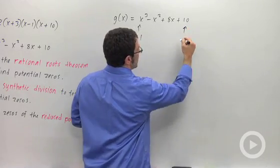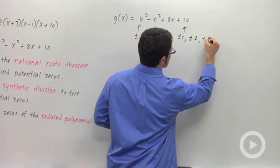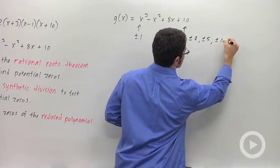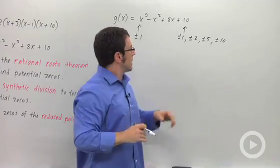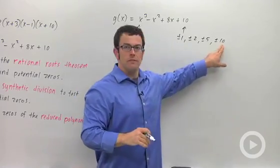And for 10, we look at plus or minus 1, plus or minus 2, plus or minus 5, and plus or minus 10. We could take two of these numbers, multiply them, and get 10. Like negative 1 and negative 10 would work.